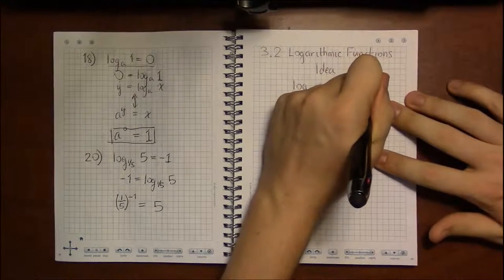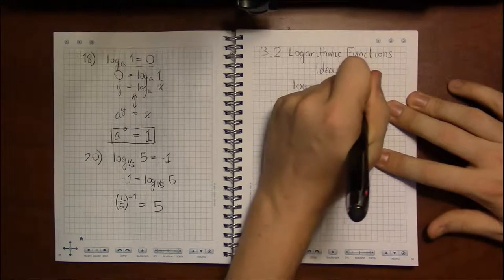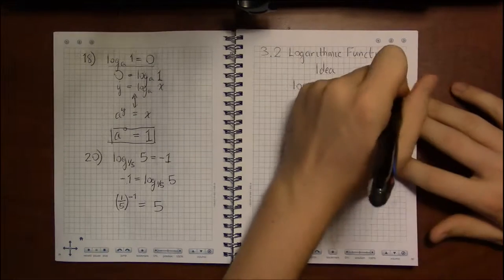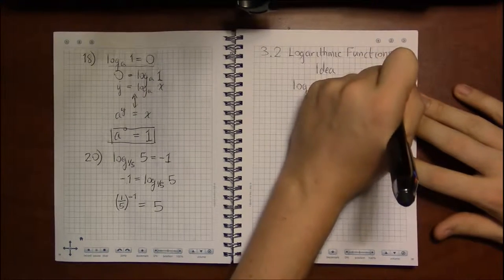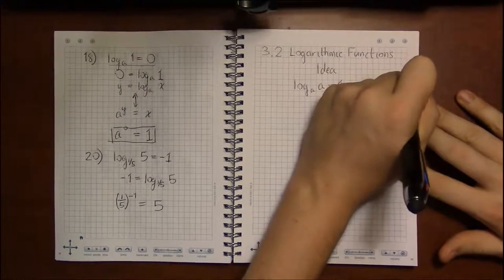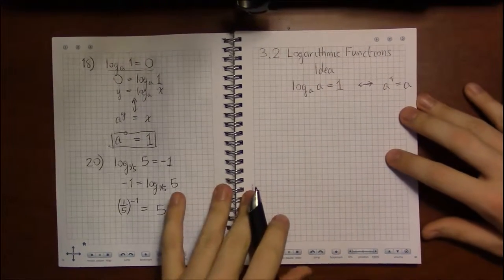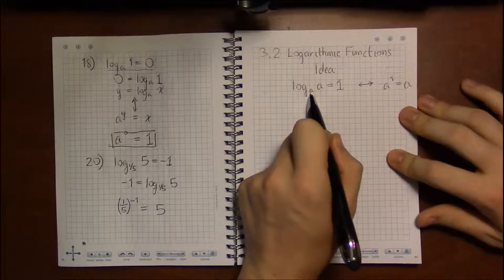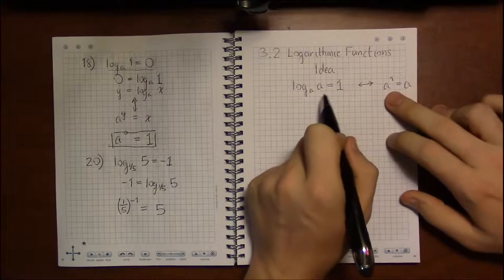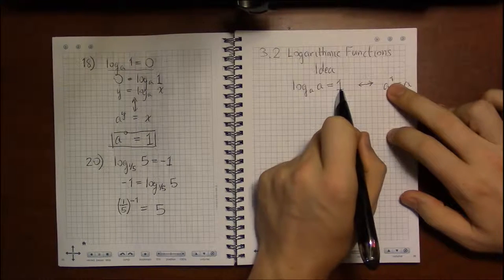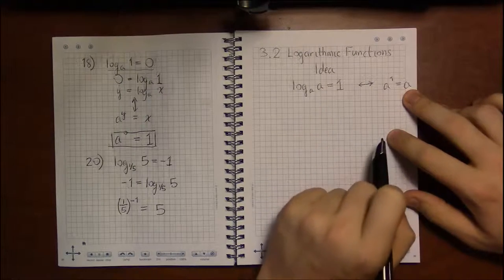That log base a of a is equal to 1. Now, I'm going to go ahead and do the conversion into exponentials for you. So hopefully these won't look too foreign to you. Saying that log base a of a is 1 is the same thing as saying that a to the first is a.